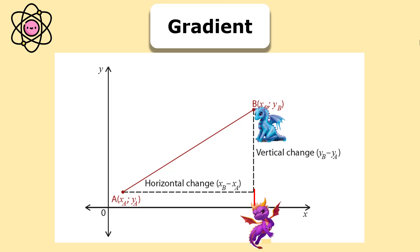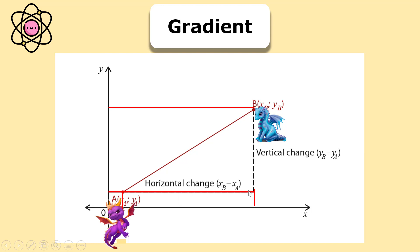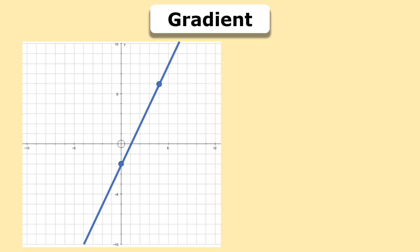To summarize: gradient is the vertical change divided by the horizontal change. Point B's coordinates are X_B, Y_B and point A's coordinates are X_A, Y_A. So the vertical change will be the length on the Y axis — you take the second coordinate Y_B and minus Y_A to get that length. To get the horizontal change, take the X coordinate of point B and subtract the X coordinate of point A.